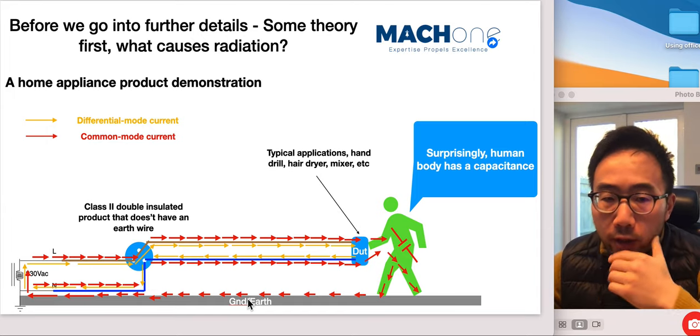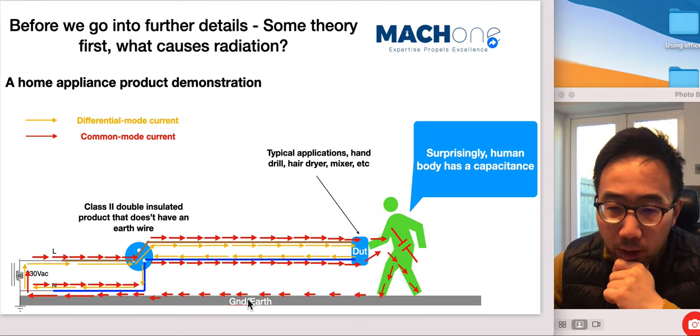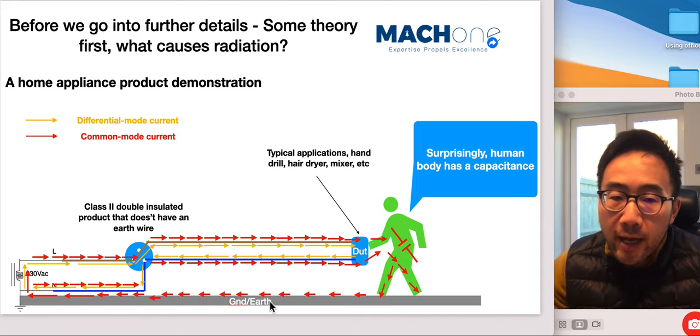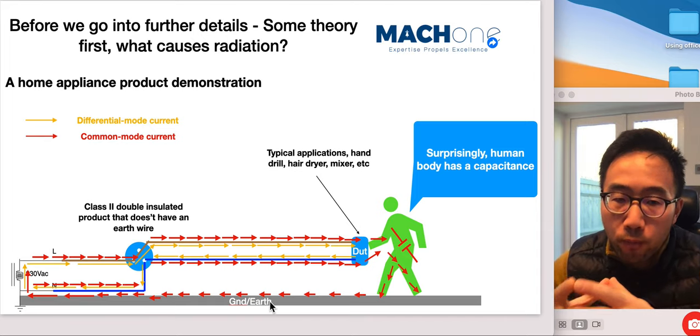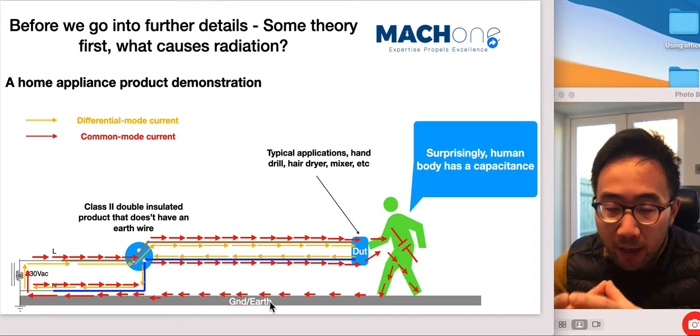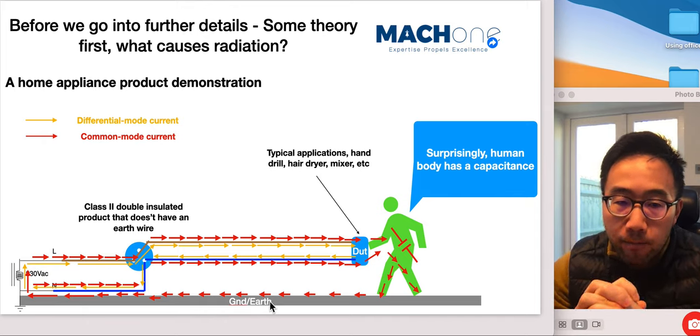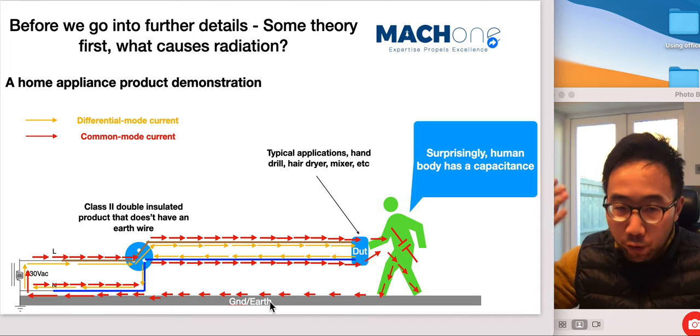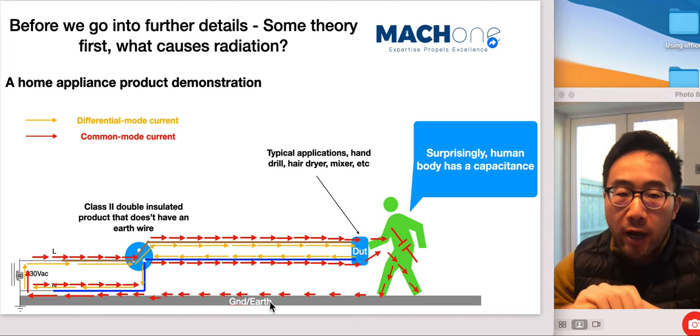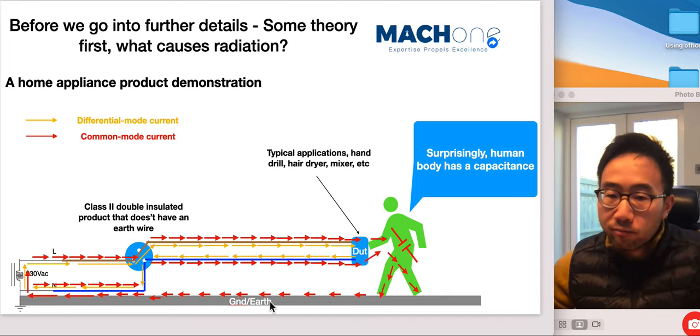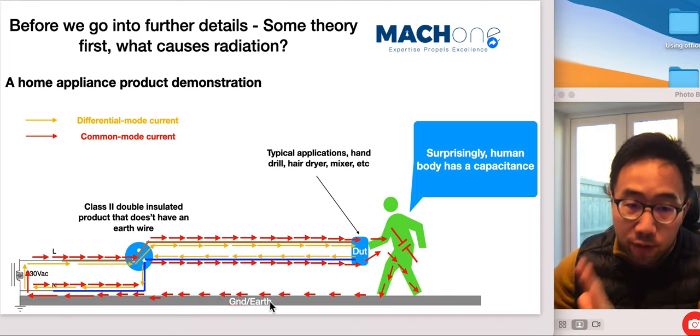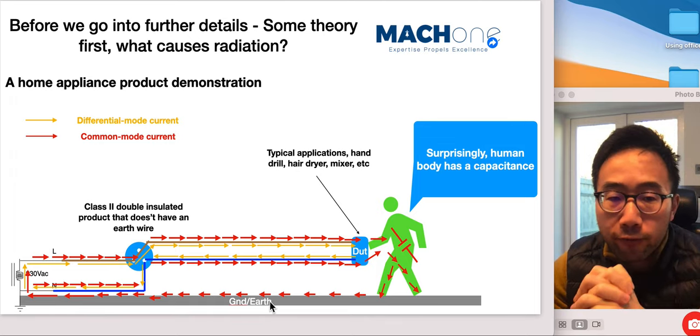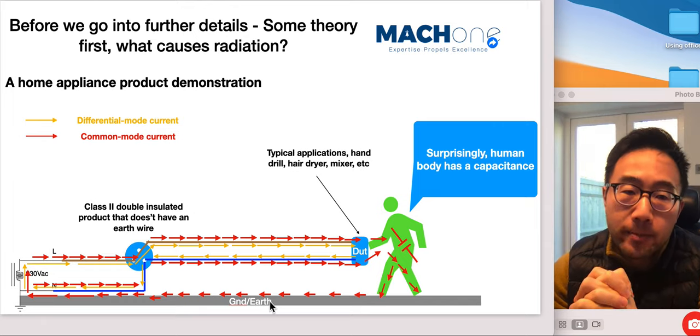Common mode currents not only use earth or ground as a part of transmission line, they use every possible metal structure that they can find. For example, if you have metal bars or beams in your house, they will use that structure. If you have a metal plate, perhaps just nearby, they will use that metal plate simply because energy always prefer to travel using the least impedance path.